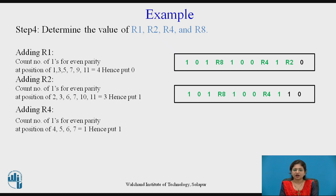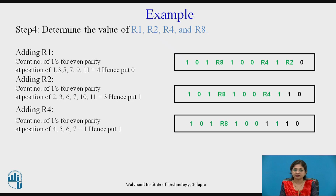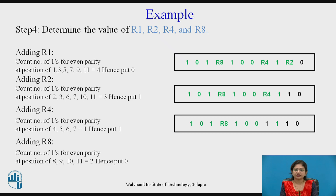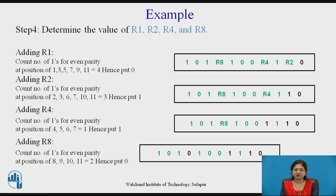For r4, count the 1s at positions 4, 5, 6, and 7. The number of 1s is 1, which is odd, hence r4 equals 1. For r8, at positions 8, 9, 10, and 11 there are a total of 2 ones — 2 is even, hence r8 equals 0. The complete data plus redundant bit frame is now: 0, 1, 1, 1, 0, 0, 1, 0, 1, 0, 1 (reading from LSB to MSB, right to left).